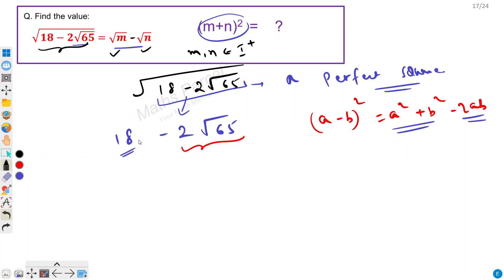So we have 2 already here. So root 65, how can we split root 65 into two terms such that the sum of those squares is 18? We can write this as (√13 - √5)².